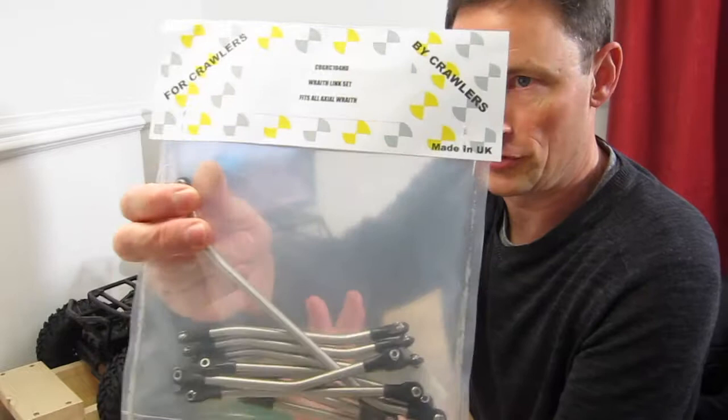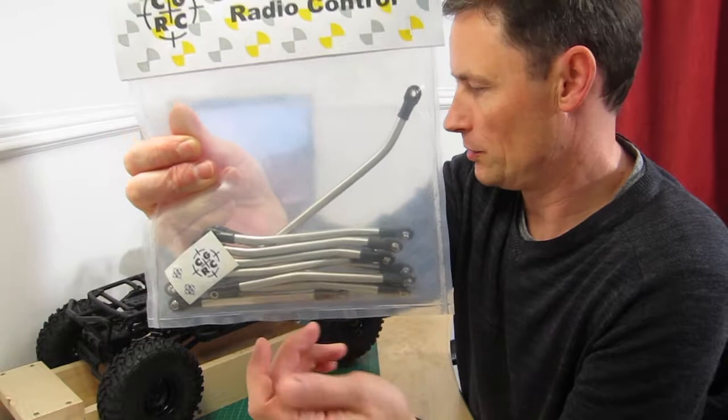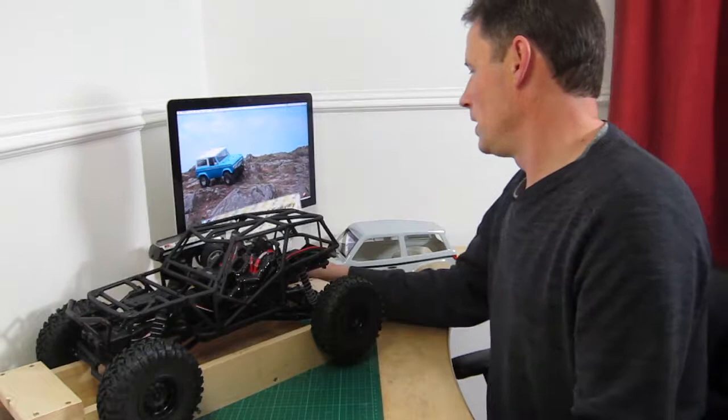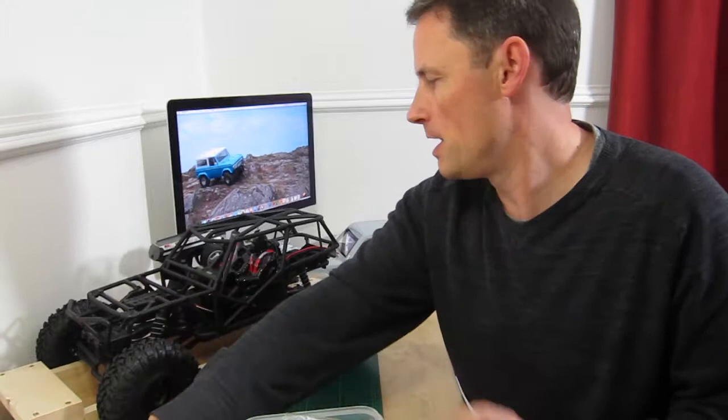What I did do though was buy a set of stainless steel links to replace upper and lower links on the front end and steering on the front end, with the theory being that those plastic ones will transfer across to the rear at a later stage if I can get the four-wheel steering to work.